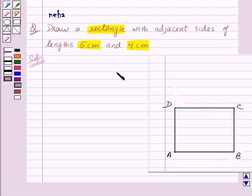Now in question we are given that the adjacent sides are of lengths 5 cm and 4 cm. And we know that in a rectangle length is always greater than the width. So the length will be equal to 5 cm.